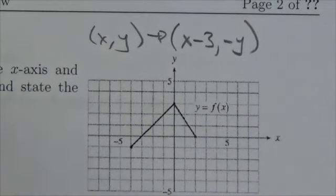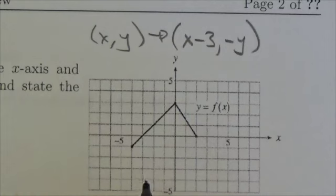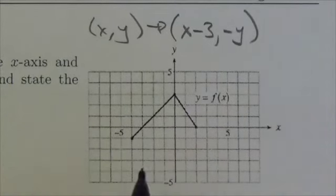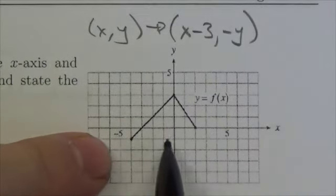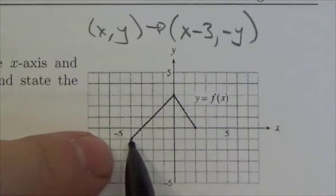So this is my image point. Now what I'm gonna do is take each individual point and run it through that. So this one was the point negative four, negative one.